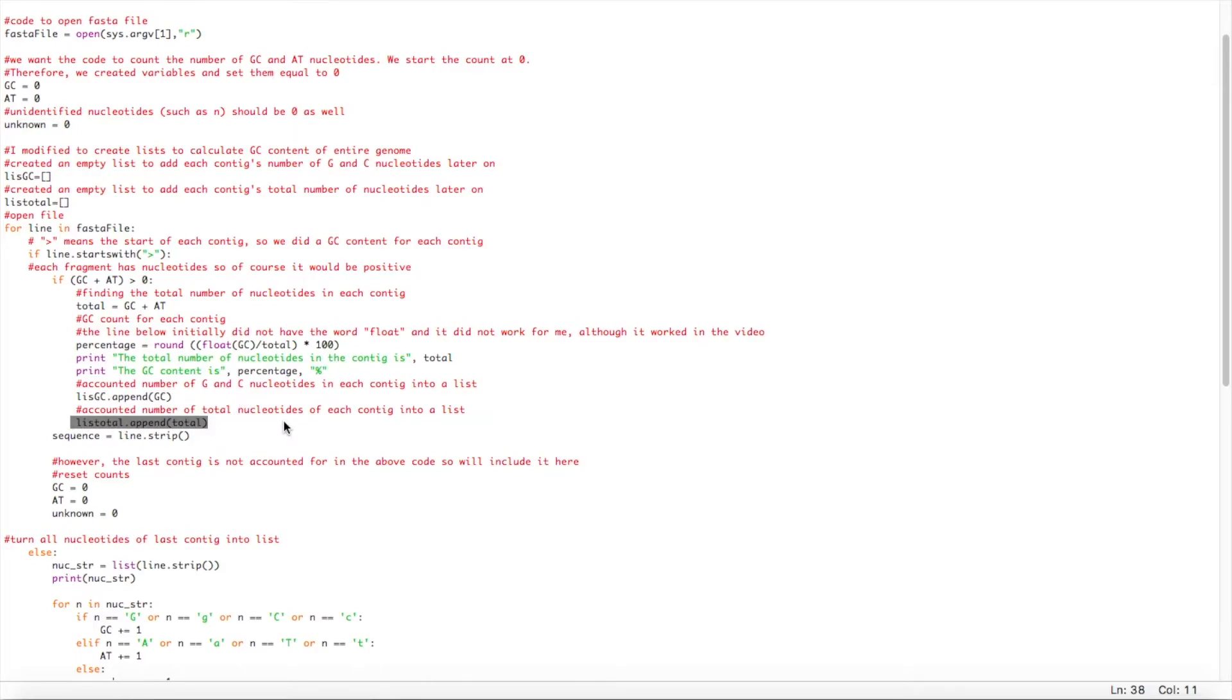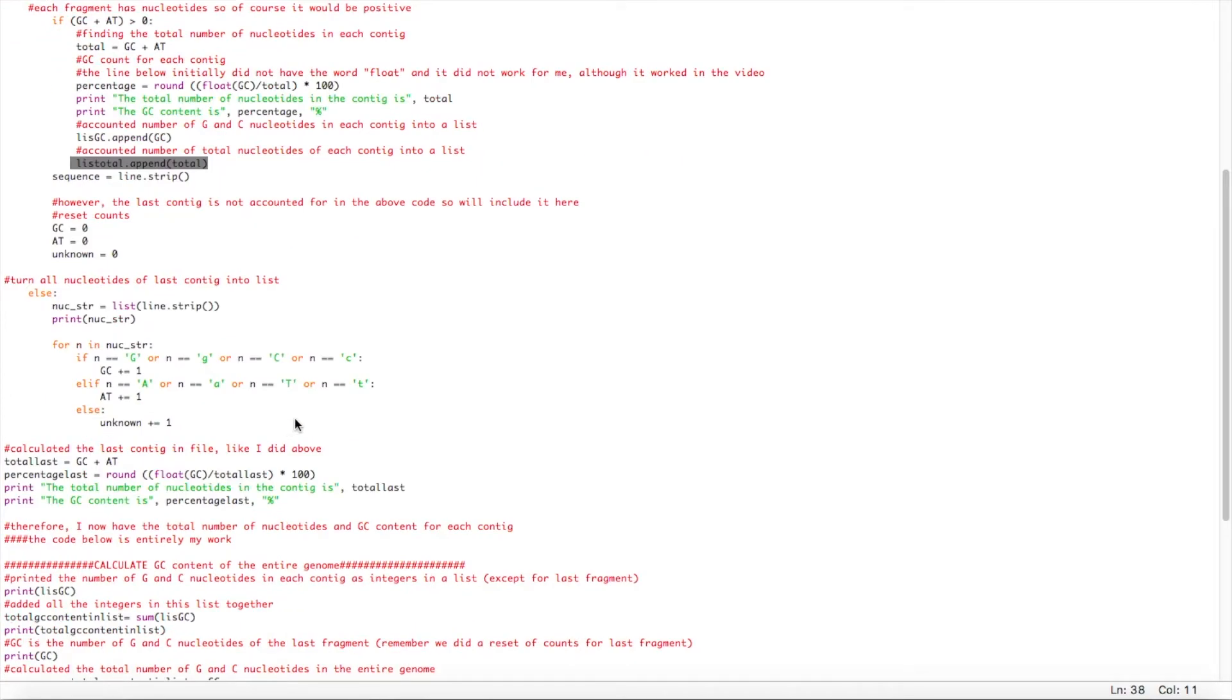However, since the code did not include the last contig, the code over here, as you can see on the screen, ensures that I have counted guanine and cytosine as well as nucleotides in the last contig.